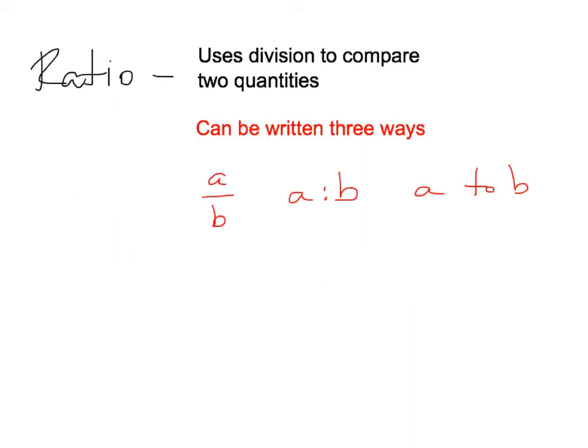So what's a ratio? Well, a ratio simply uses division to compare two quantities, and it can be written a couple different ways: A over B, A colon B, or A to, literally the word to, B.